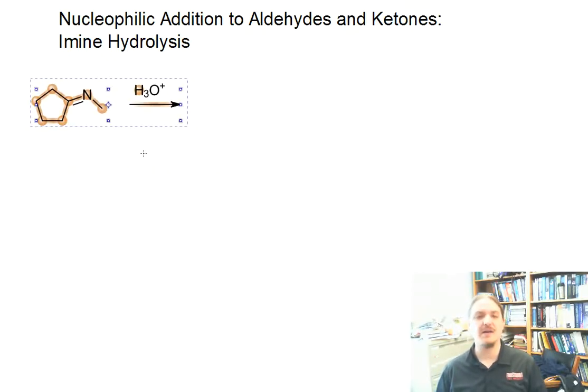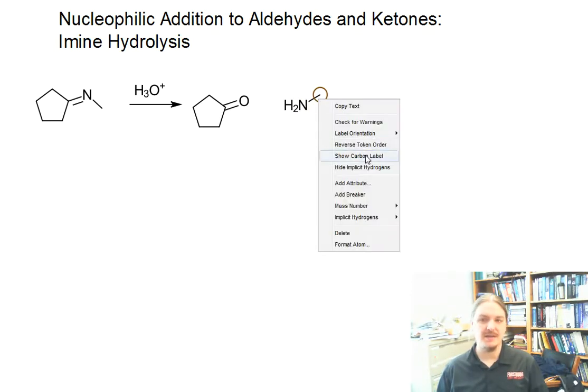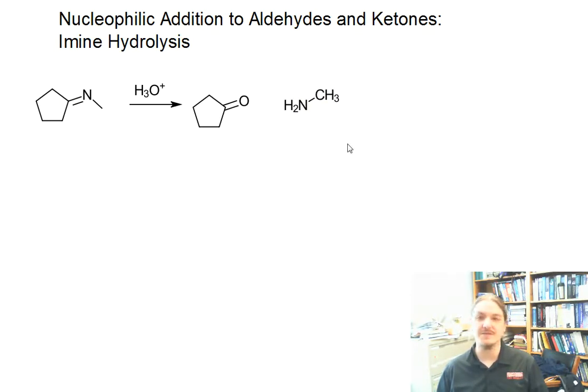Imines can be hydrolyzed in dilute aqueous acid, and the products of those reactions are the carbonyl compound that the imine was formed from and the amine that the imine was formed from. Because we're in acid, the amine actually probably forms as its ammonium cation with whatever counter ion is present.